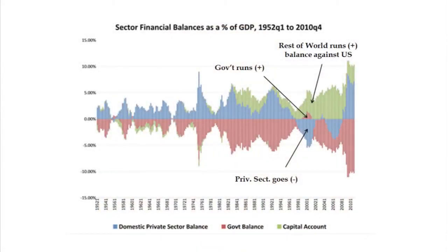If you leave here tonight and take just one thing to convince your friends and neighbors, take this picture — it's really powerful. What you see is a mirror image: you could fold the top half down and it would exactly line up with the bottom half. The blue line is the private sector's surplus. When it's above zero, that's good — you have a surplus. When it's below zero, you're in deficit, spending more than your income.